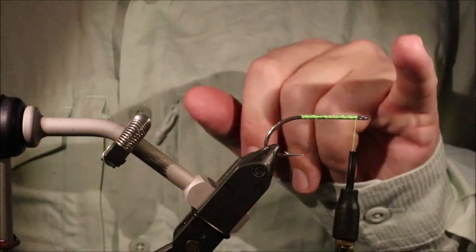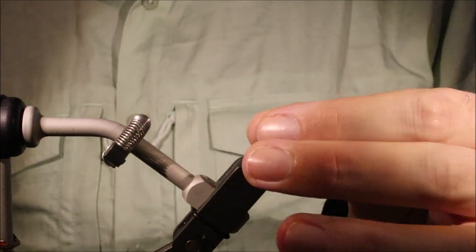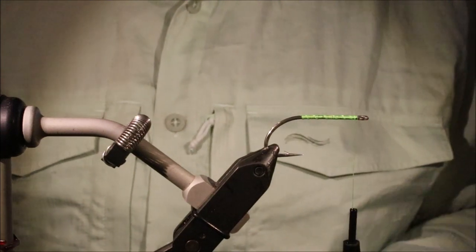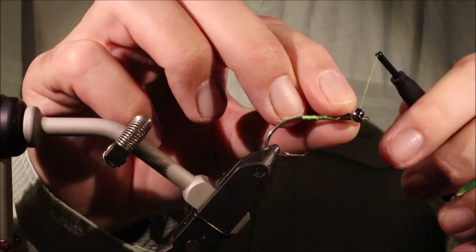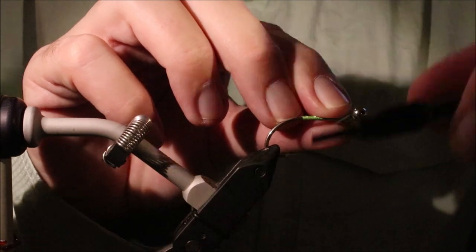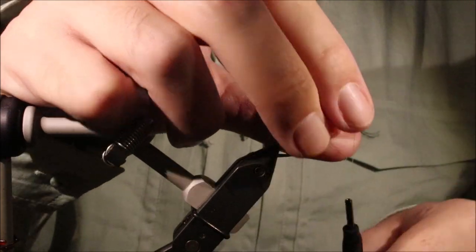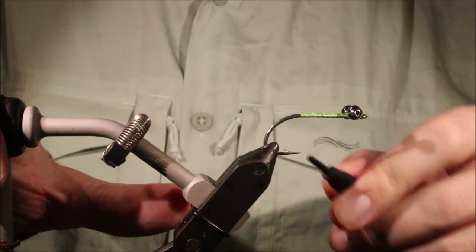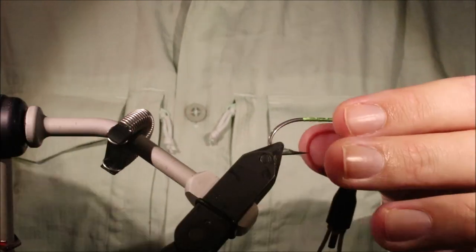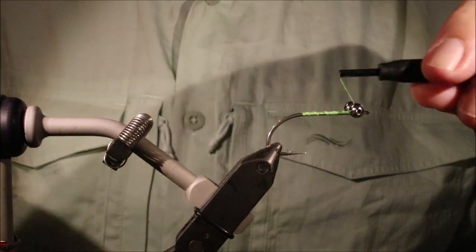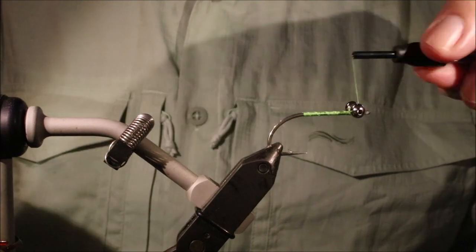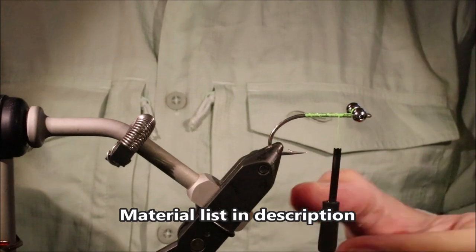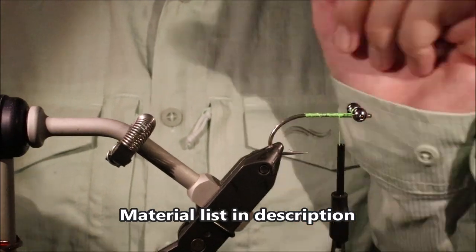So I'm going to hook my vise, now I'm using for this an Umpqua U401 size 1-0, but you can use whatever sort of standard shank saltwater hook you like, like a Mustad 34007. I'm just going to tie on my bead chain eyes first, these are 5mm stainless, so quite big. You can obviously adjust the size, make sure they're nice and straight, and take some wraps over the eye and under the hook, and then under the eye and over the hook to tighten up. Now I'm not going to put a weed guard in this one, so I've got them right up close to the eye.